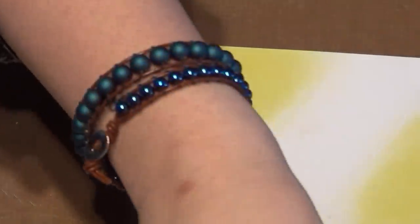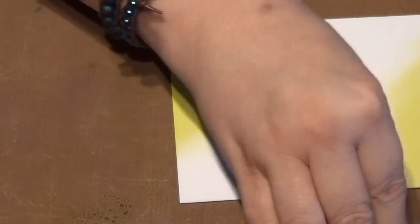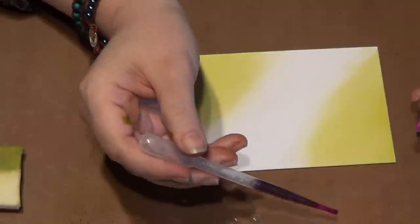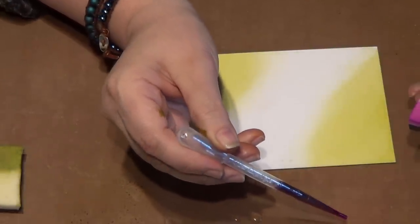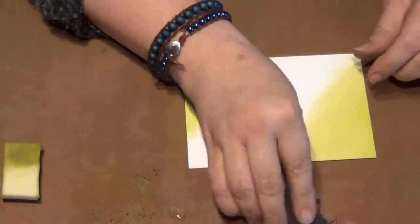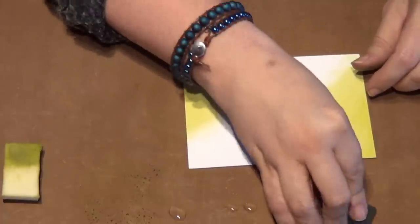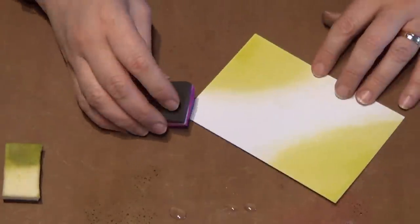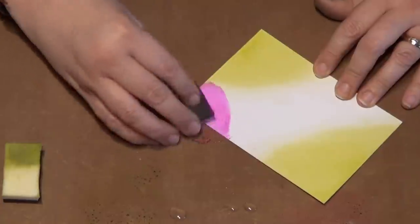We're going to do the same with another color, let's try the pink. Take the foam, splodge it, get some glycerin on there, take a little bit of the color. One, two, three. I'm only going to do three drops this time. Try to pat it so that you're going to get that dispersed over your foam as best you can, and then apply that color.